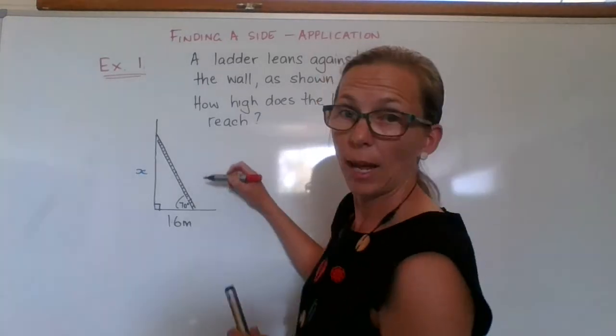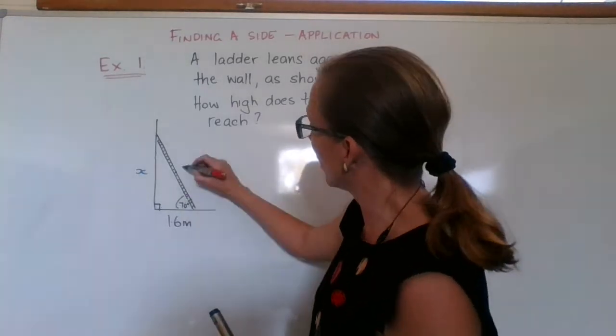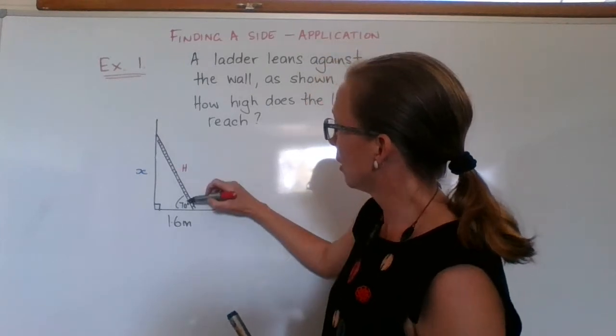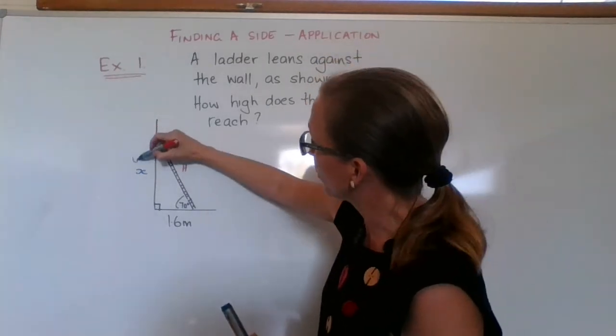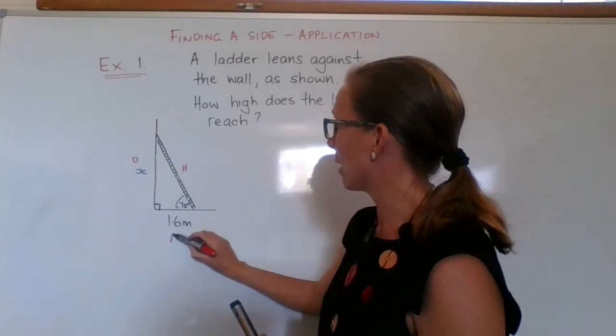So we're going to label our sides. My right angle's here, this is my hypotenuse, here's my angle that I care about, so this is my opposite and this is my adjacent.